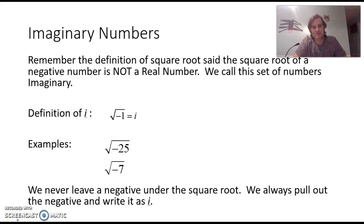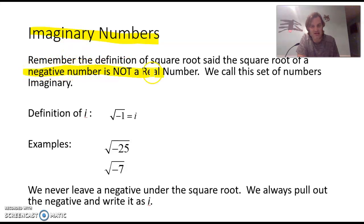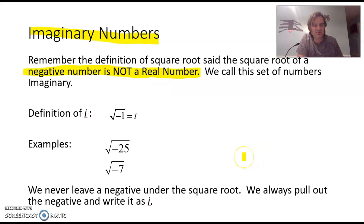Hey, Mr. Allred, and we're continuing talking about radicals and roots, but now we're moving into what is known as imaginary numbers. That sounds weird if you've never heard of it, but if you remember when we talked about the definition of the square root, we said the square root of a negative number is not a real number — something we'd put on our normal number line, like we could measure, or our bank account could record as a positive or negative or a distance from here to there. We call that imaginary.